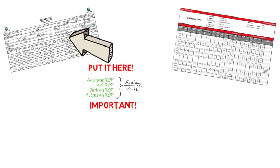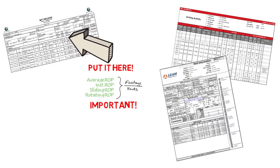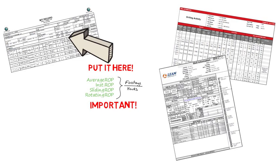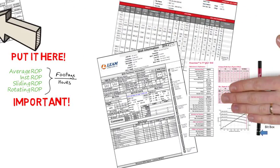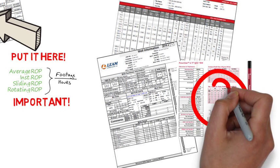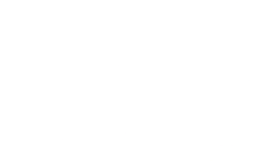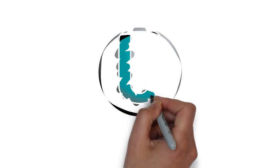This information and much more can be found on the Directional Driller Slide Sheets and BHA Report. There are many other components that affect drilling performance, like motor configuration, which will be the topic of the next segment.